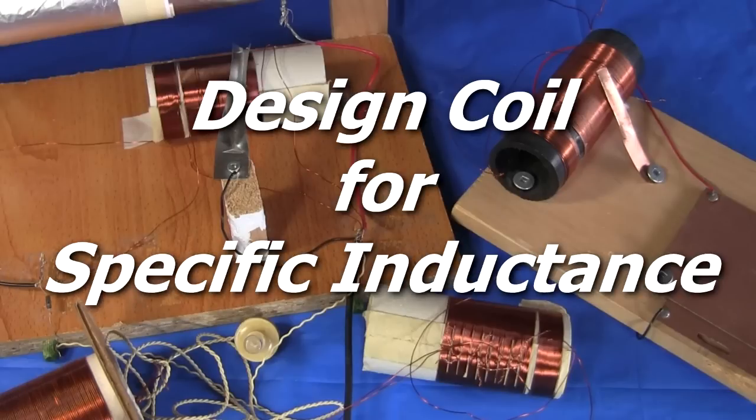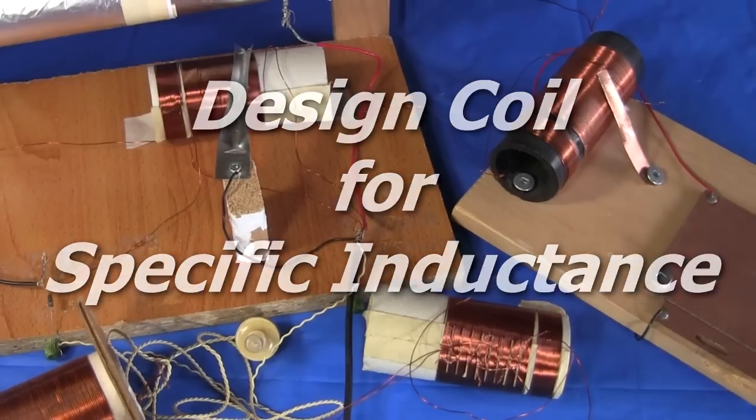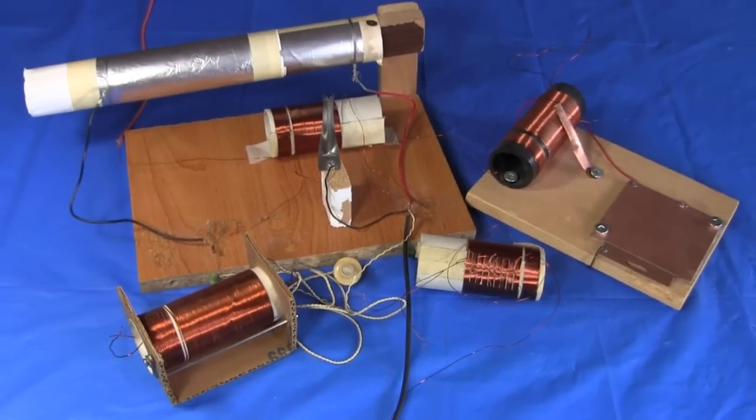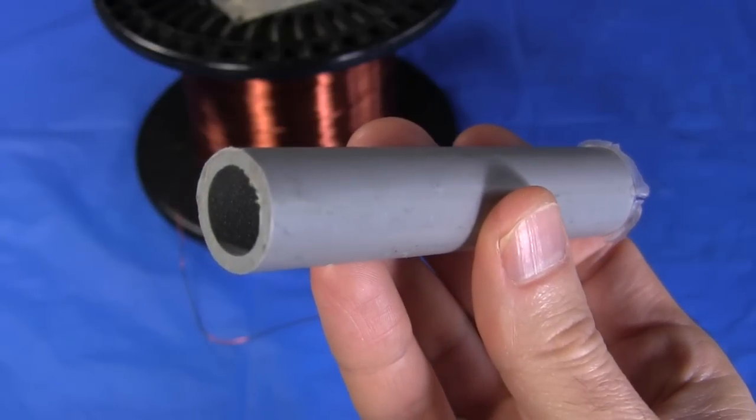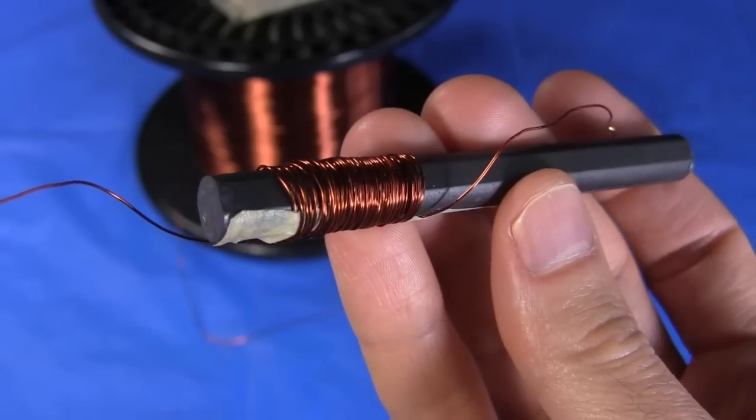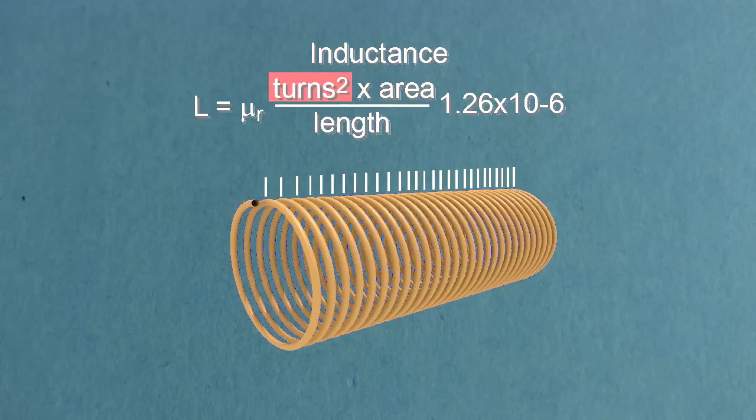I'm going to show you how to design a coil for a specific inductance. I often get asked questions about what types of coils can be used for crystal radios. Can I wrap it around a small electrical tube? Can I use a ferrite core? How many turns will I need? And so on.